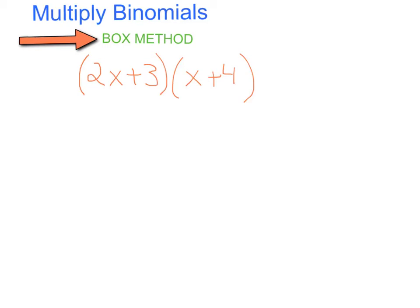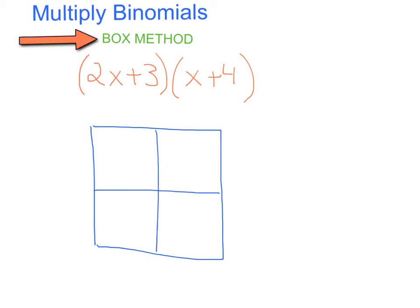So here are two binomials: 2x plus 3 times x plus 4, and I'm going to show you the box method first. When you are first learning this concept, a lot of students prefer the box method because it really keeps all of your work organized, but as you do a few of these, a lot of you will start to prefer the FOIL method because you can get the answers a lot quicker. To use the box method, I'm going to create a 2x2 box — 2 units by 2 units — because I'm dealing with binomials which have 2 terms. I'm going to write one of my binomials on the side of my box and then the other one on top.